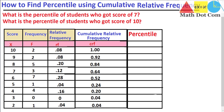So if I multiply 1 by 100 I get 100. If I multiply 0.92 by 100 I get 92. These are the percentages. 0.84 will be 84 percent, 0.64 will be 64 percent, 0.52 will be 52 percent, 0.24 will be 24 percent, 0.20 will be 20 percent, and 0.04 will be 4 percent. So these are the percentages obtained from the cumulative relative frequency.